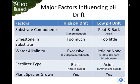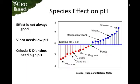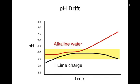In this presentation we're really going to focus on fertilizer type. When you look at the species effect on pH — one of the factors to consider — what the plant does during production is not always desirable. In some cases it will increase pH, in others it will decrease it. You can see the increase as blue dots going up to the right, and red represents pH going down. For instance, vinca would like a lower pH, while celosia and dianthus would prefer a higher pH, so the plants are in many cases working against you.